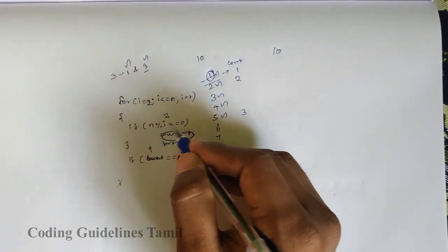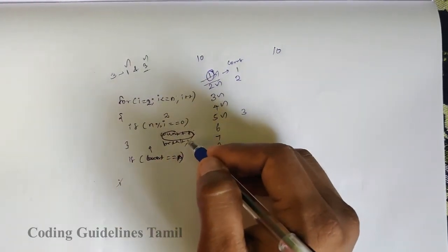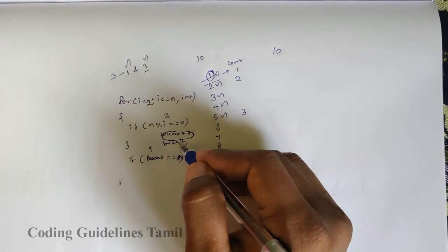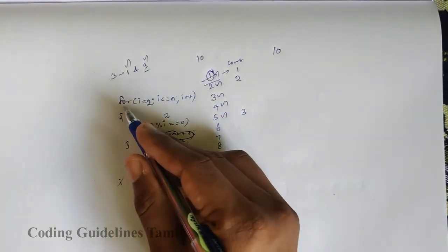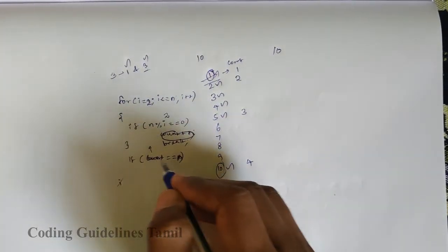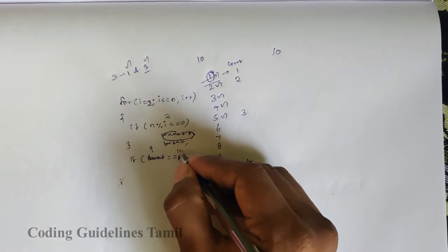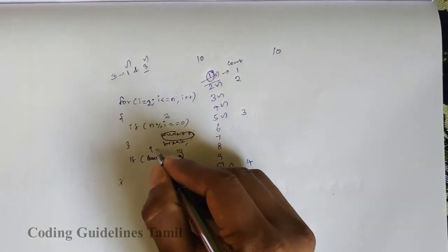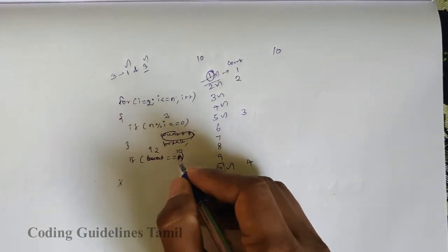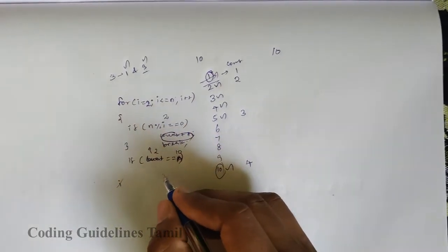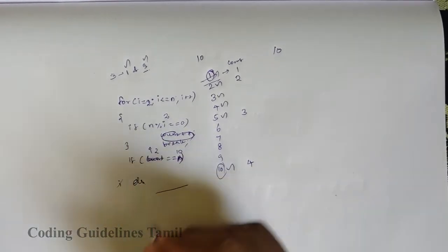10 divided by 2 equals 0, condition is true, so break is true. Output from the for loop: the i value is not equal to n — 2 does not equal 10 — so this will not print prime.